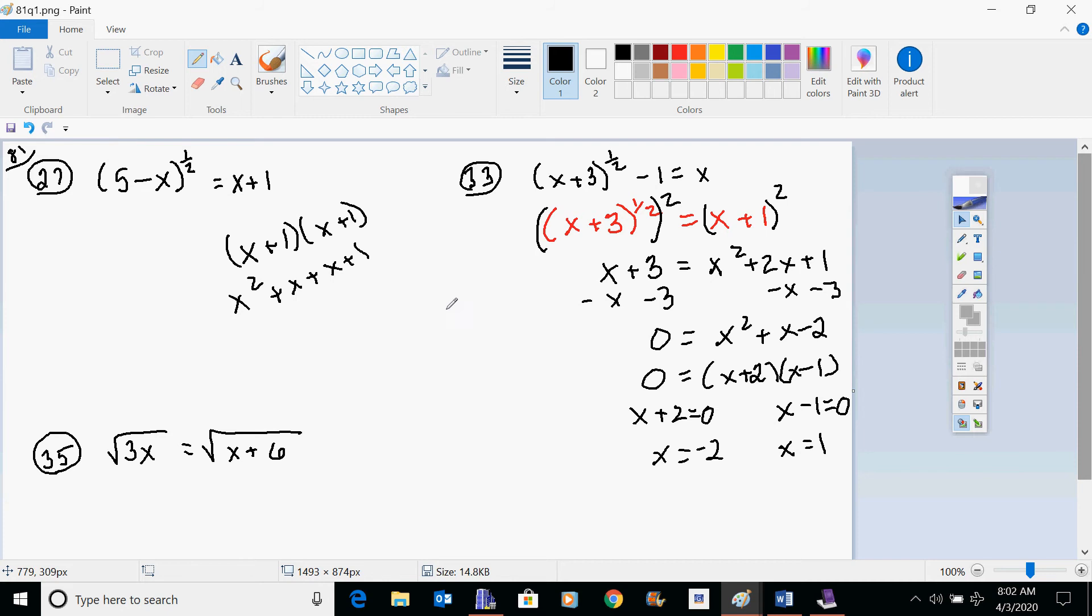You should go back and check for extraneous solutions, so you would put this back in and make sure that it works. Let's just do that really quickly here. And so we're going to take a look for our extraneous roots here. negative 2 plus 3 to the 1 half power minus 1, and we are checking to see if that equals negative 2. Well, when we have here negative 2, this would be 1 to the 1 half power, which is the square root of 1, which gives you 1 minus 1. That's 0. It's not negative 2. So this one is extraneous. This one does not work.